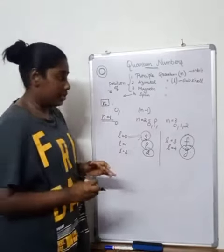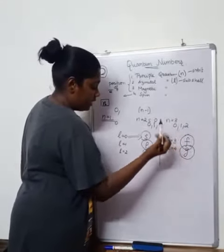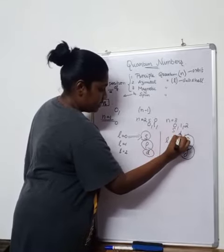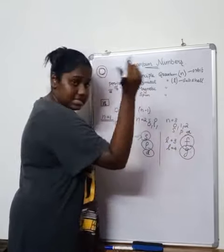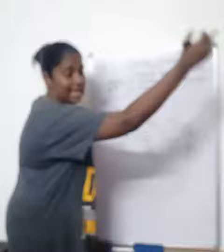So, this is what it denotes. And here, 0, 1, 2. Here the subshells are S, P and D. When n is equal to 4, it is S, P, D and F.